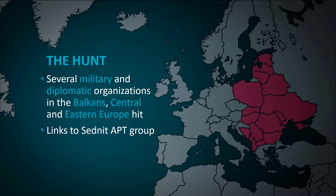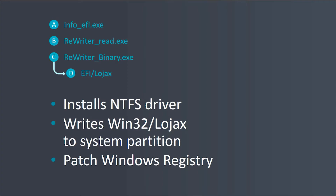We discovered that the UEFI rootkit was deployed in an APT campaign against government and diplomatic organizations in Europe. Although the implementation was far from trivial, its functionality was pretty straightforward. After the computer was powered on, the rootkit was triggered. First, it would load the NTFS driver to allow read and write operations — a necessary step as Windows hasn't loaded yet. Afterwards, the rootkit writes the user-land LoJack small agent to the file system and ensures its execution by patching the Windows registry. Apart from the rootkit itself, we discovered tools used to install it by writing it to the UEFI firmware memory.